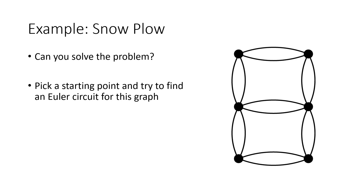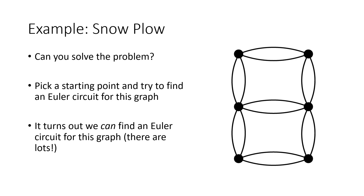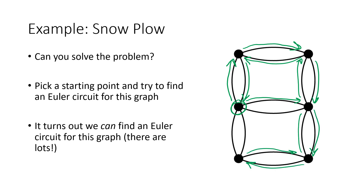Can we find an Euler circuit for this graph — pick a starting point, traverse every edge exactly once, and return to start without retracing steps? Give it a try: copy the graph onto paper, pause the video, and see if you can do it. It turns out we can, and there are actually many Euler circuits for this graph. Starting at one vertex, you can go up, over, back, down, right, up, down again, left, right, up, left, down, and back — pretty straightforward. When an Euler circuit exists, it's usually not too difficult to find. If the vertices were labeled A, B, C, D, E, you could write down the sequence of vertices visited — that list is your Euler circuit.